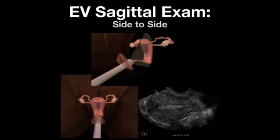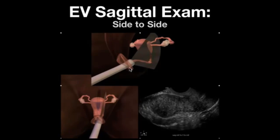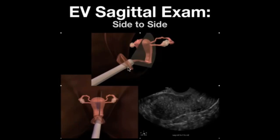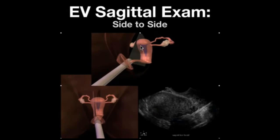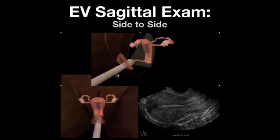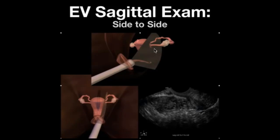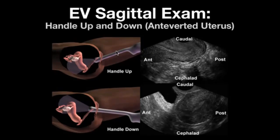Scan the whole uterus. On the endovaginal sagittal exam of an antiverted uterus, you can see the myometrium, endometrium, and posterior cul-de-sac. Sweep from side to side: bringing the transducer toward the patient's left thigh visualizes the right side of the uterus, and bringing it toward the right thigh visualizes the left side. In addition to side-to-side sweeping, bring the handle up to better visualize the lower uterine segment, cervical region, and posterior cul-de-sac in an antiverted uterus.